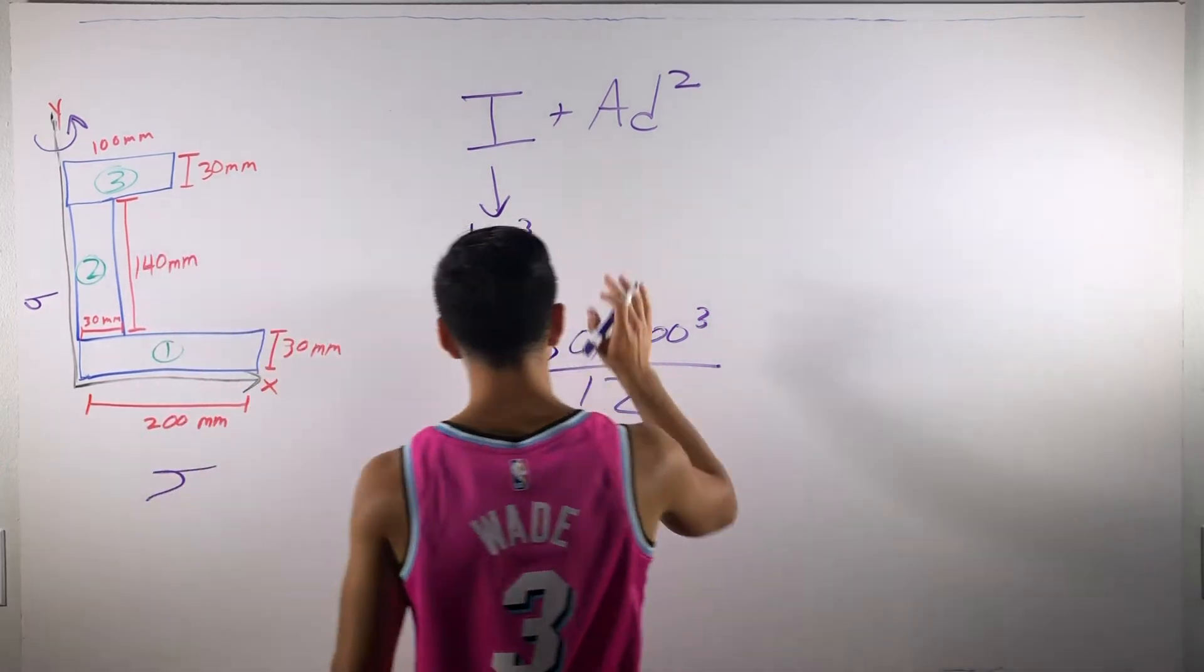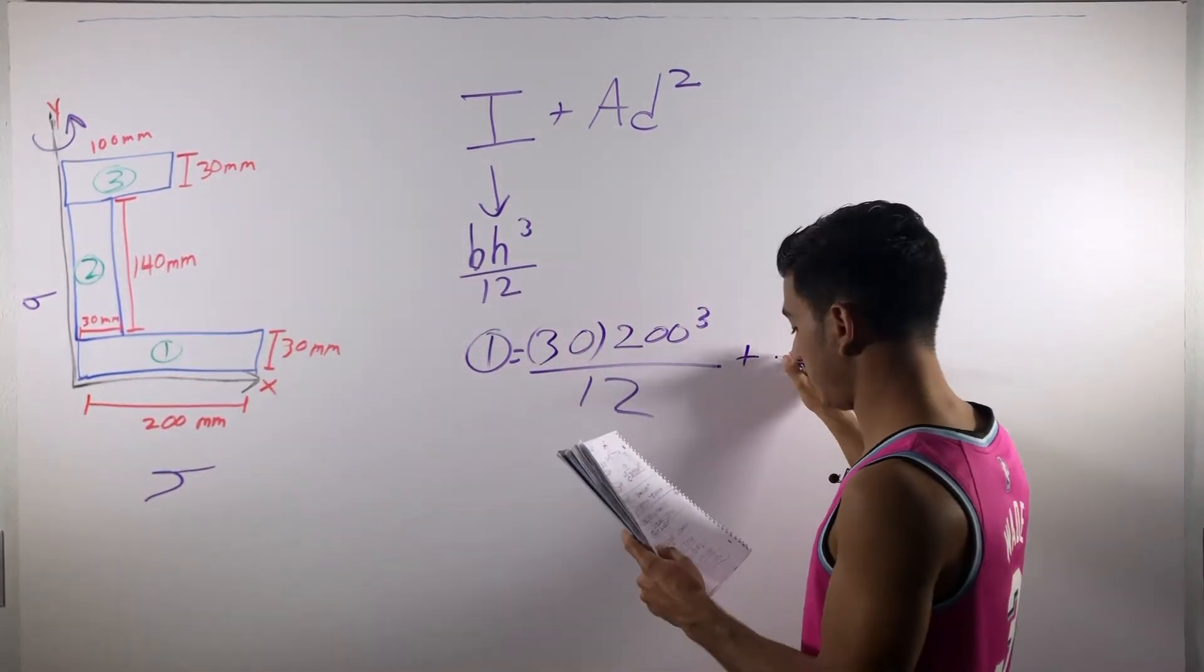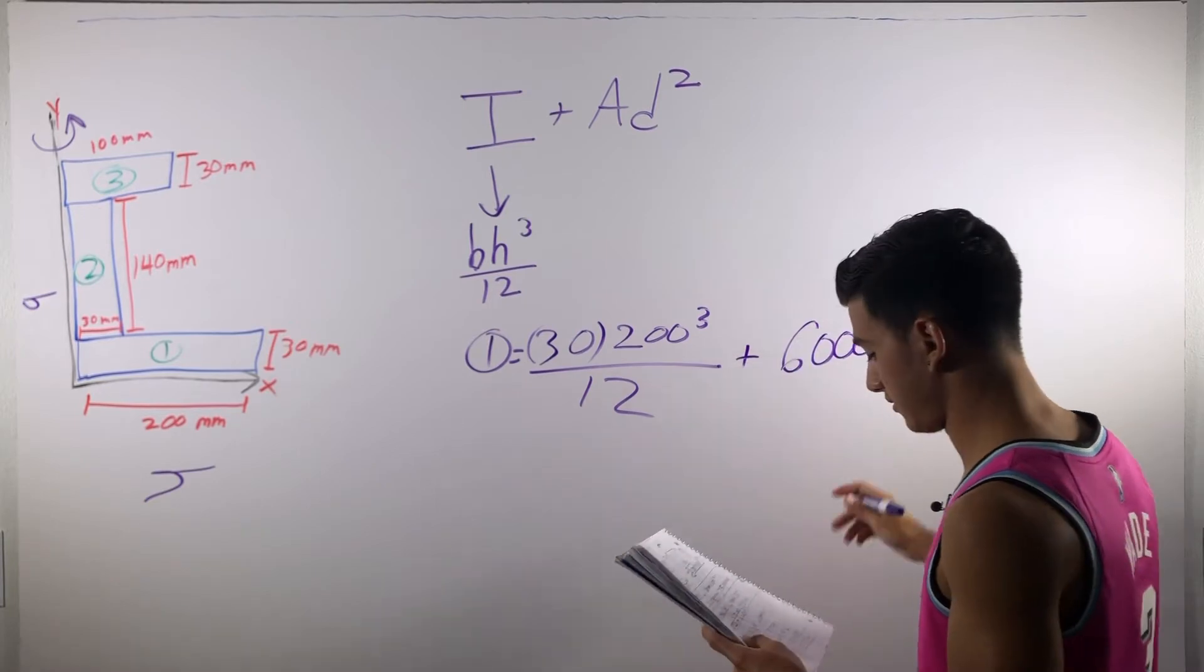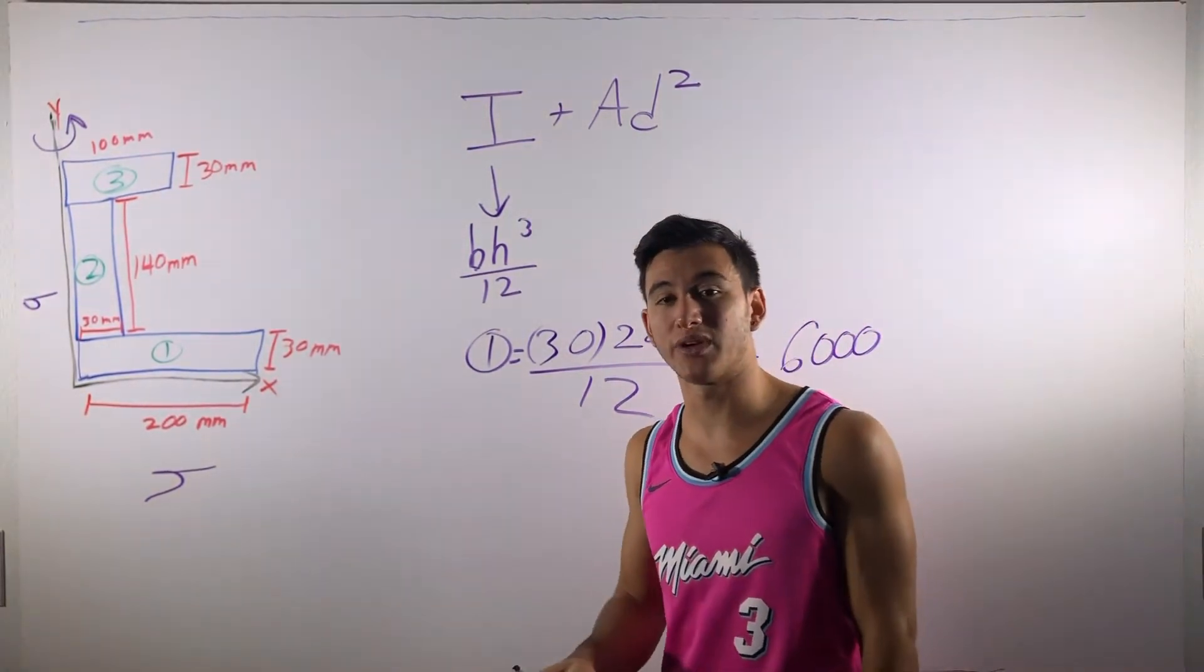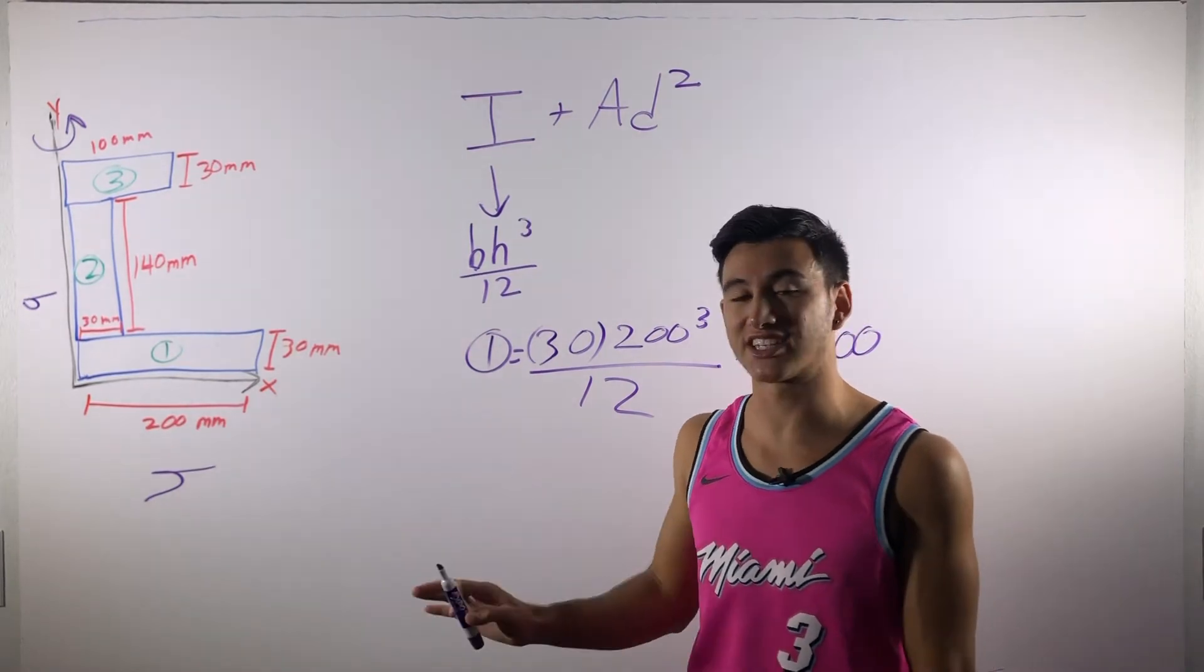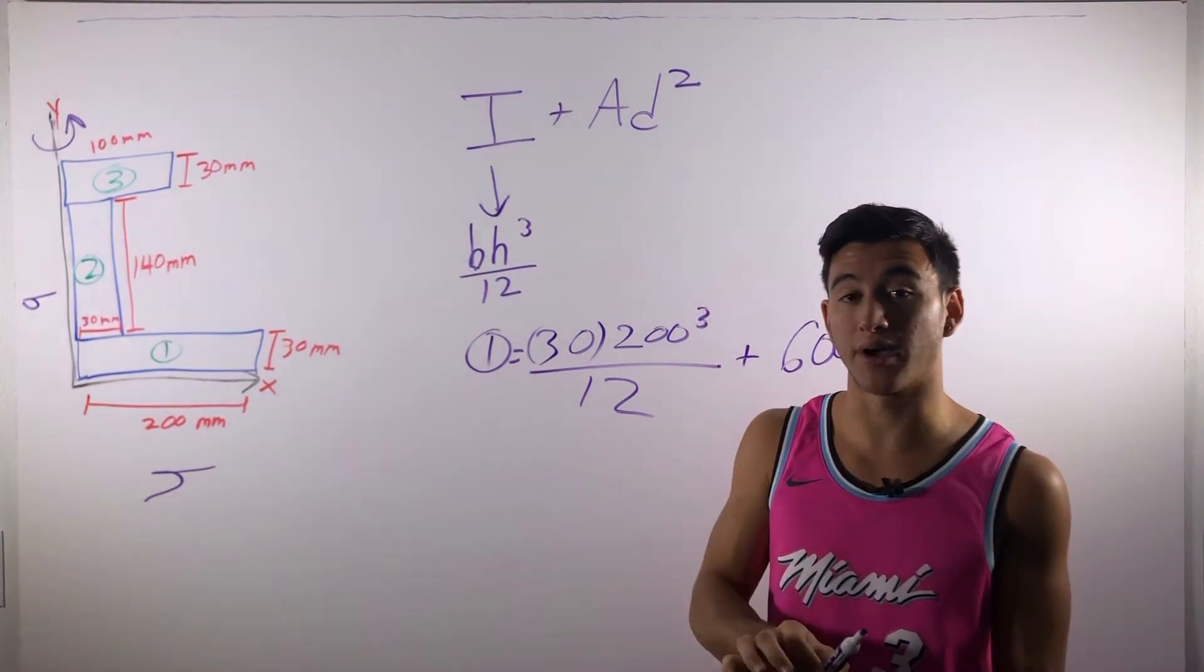So, now the area is just base times height. So, that's going to come out to be 6,000. And then the D is tricky. The D is the distance between the centroid of our specific section we're dealing with and whatever you're rotating it about.